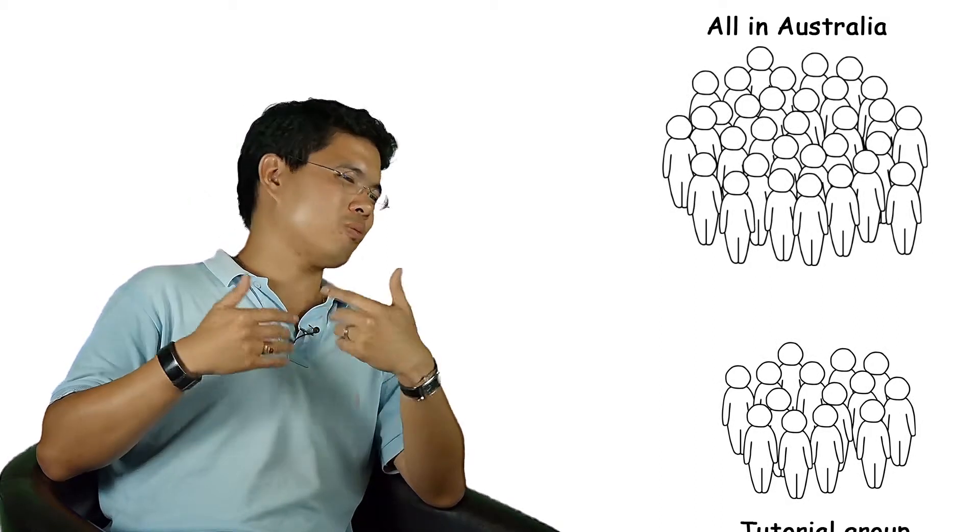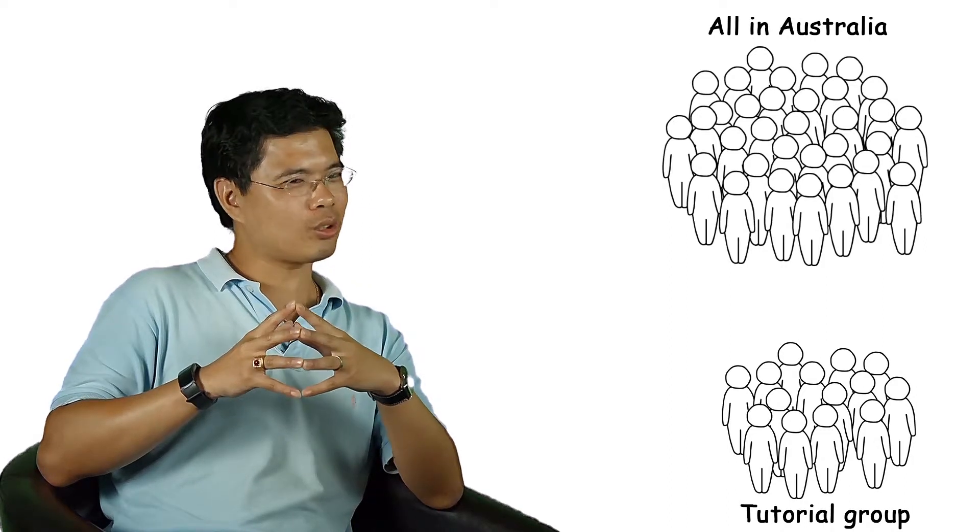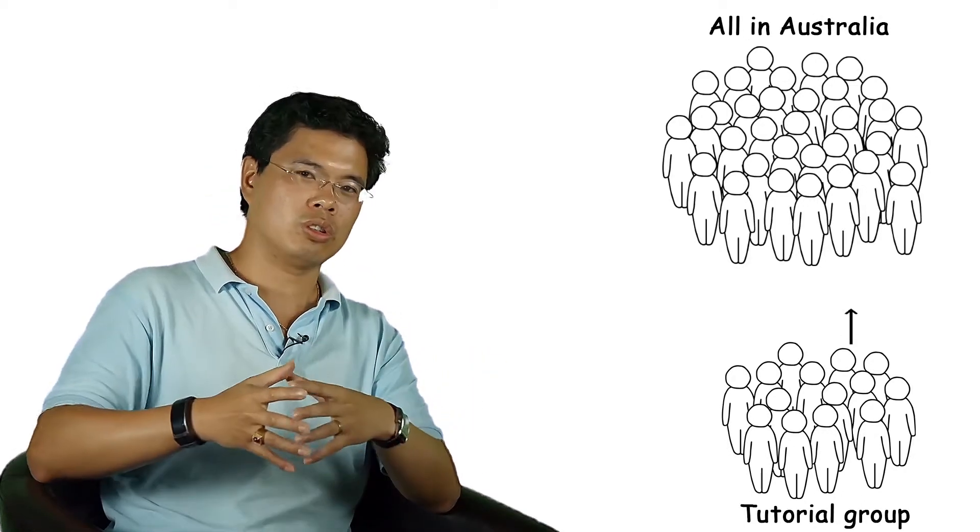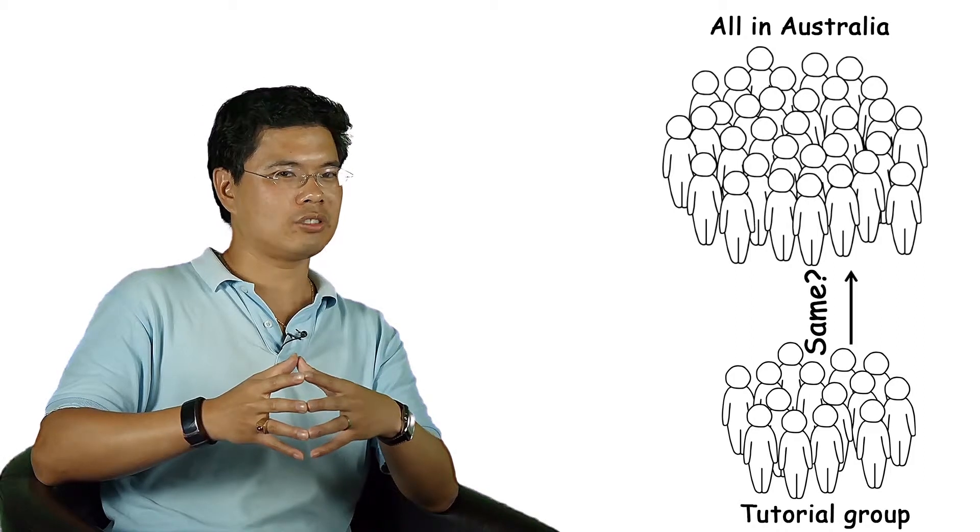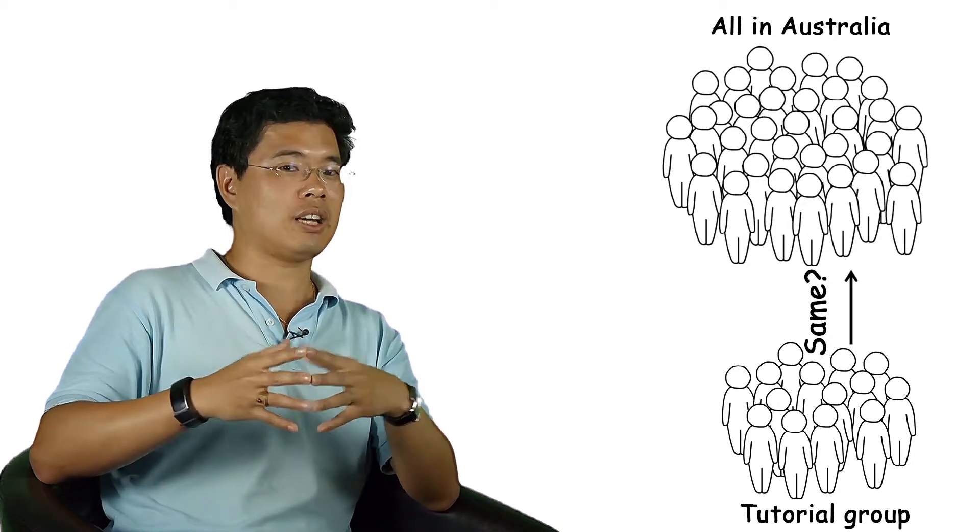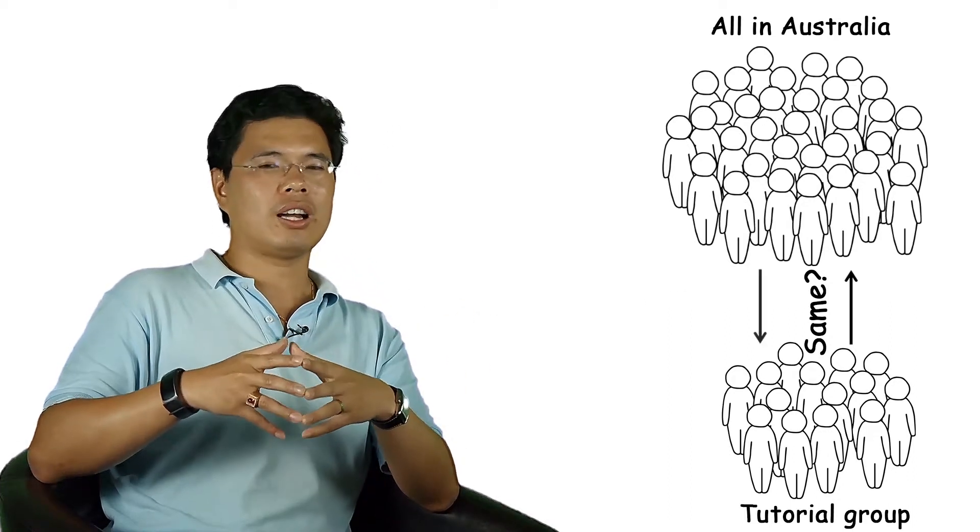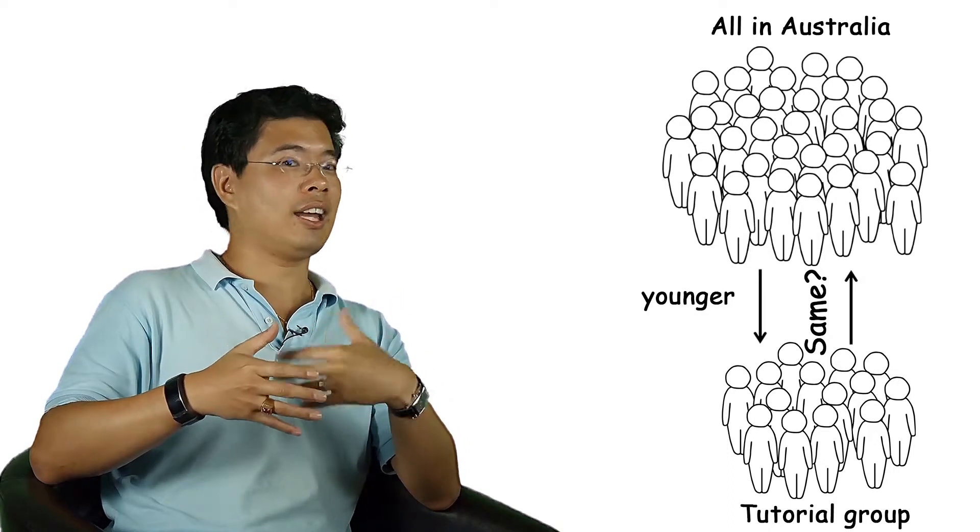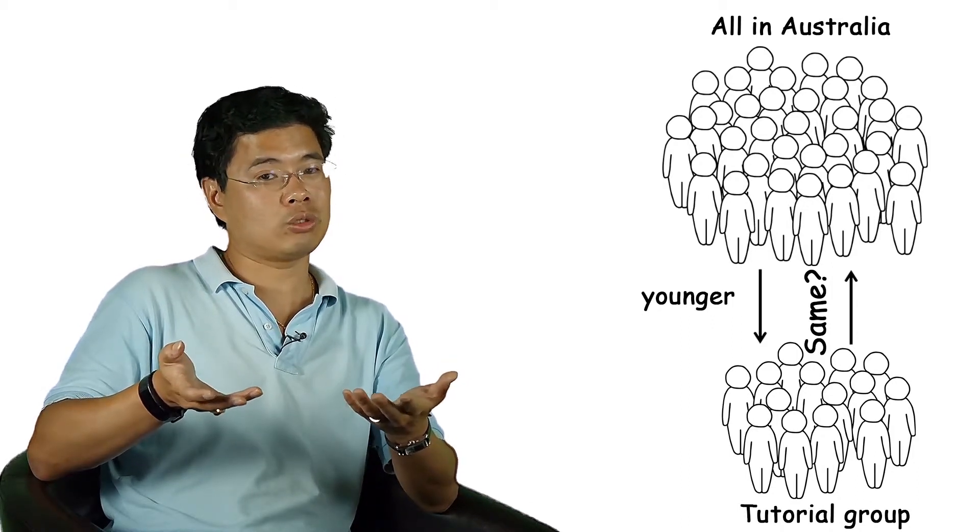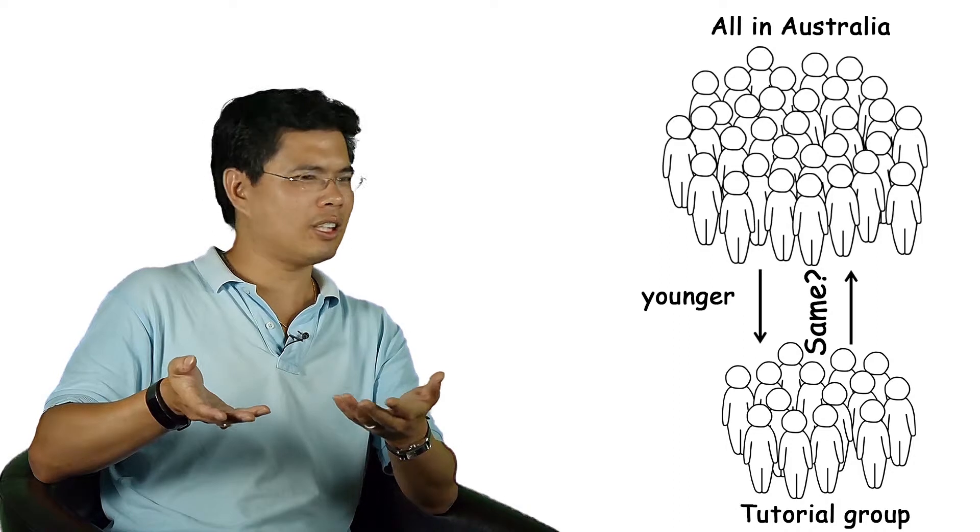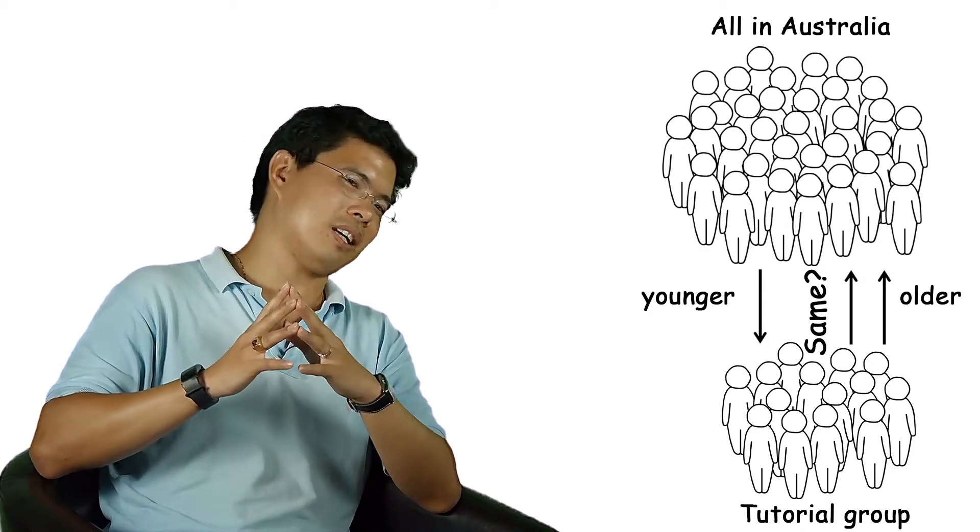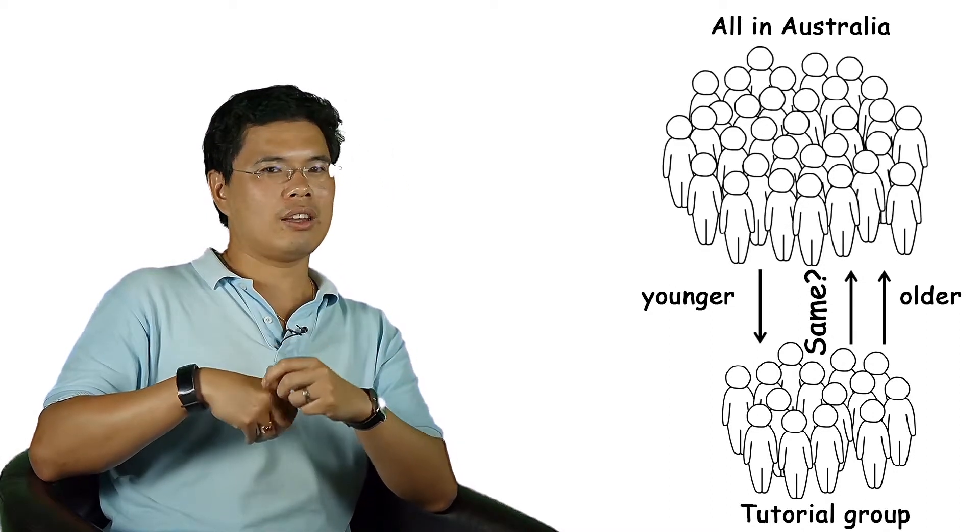But let's think about this a little bit more. Would you really want to use that 170 centimeters? There's a lot of questions. First question being very simple: are the students in your tutorial representative of the Australian population? Let's think about it. The students in your tutorial are relatively young, and the average age in that particular tutorial might be only, let's say, 19 or 20 years old. Think about the average age of an Australian—it's probably around 35 or 36. That's one thing to think about.